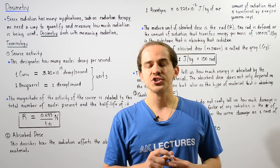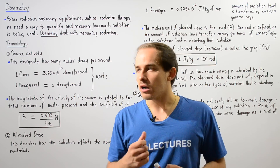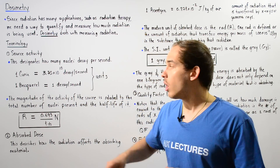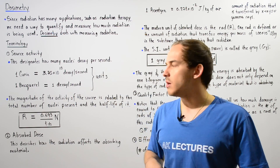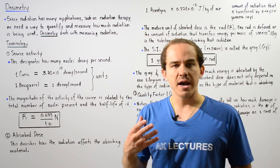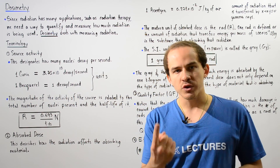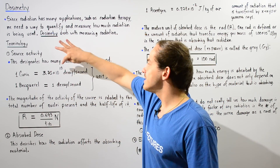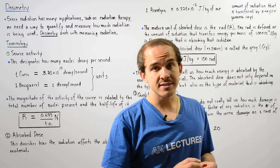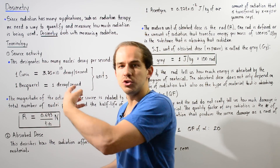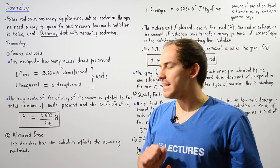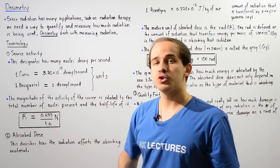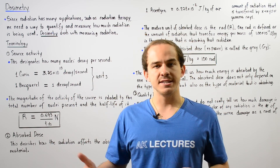There are two units we must be aware of when dealing with source activity. Unit number one is known as the Curie, and unit number two is known as the Becquerel. One Curie is equal to 3.70 times 10 to the 10 decays per second — a relatively old unit. The modern unit is the Becquerel, where one Becquerel equals one decay per second.